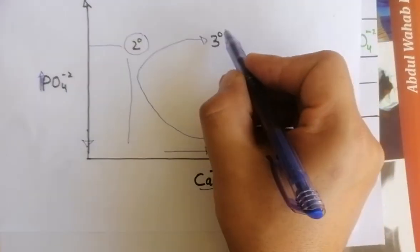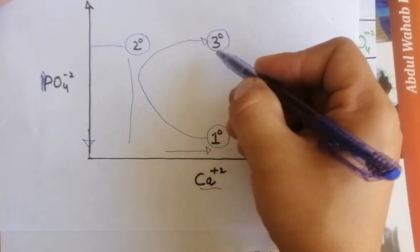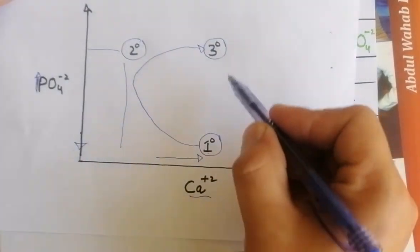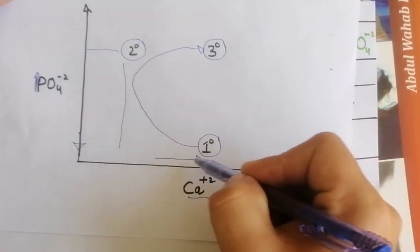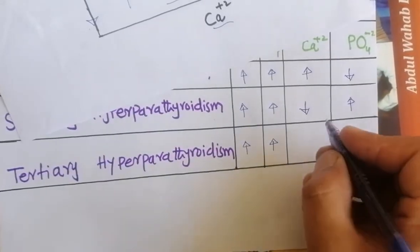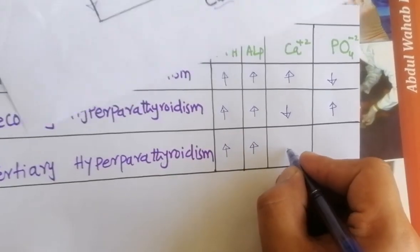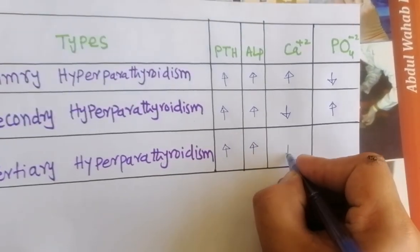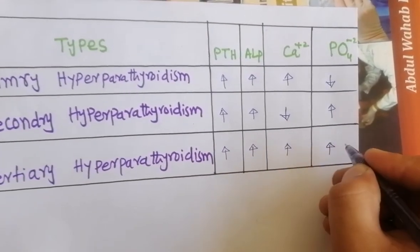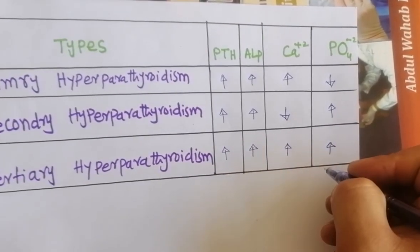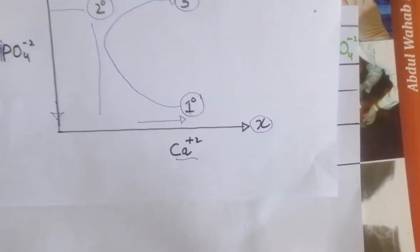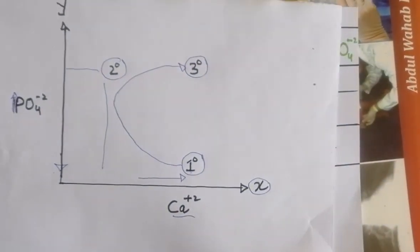Similarly, in tertiary hyperparathyroidism or third degree hyperparathyroidism, calcium level is increased while phosphate level is also increased. In tertiary hyperparathyroidism, both calcium and phosphate levels are increased. So this is a simple trick for hyperparathyroidism.